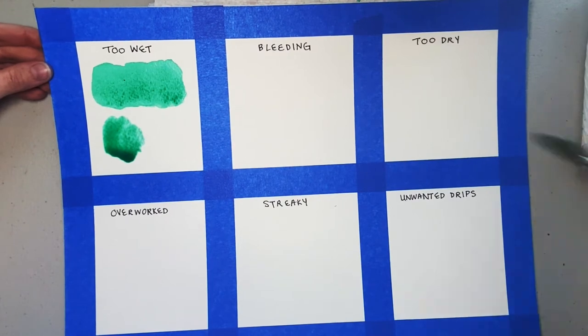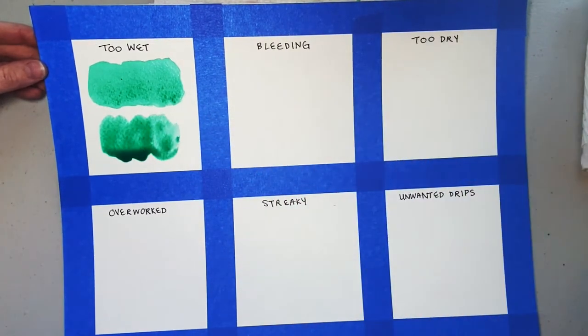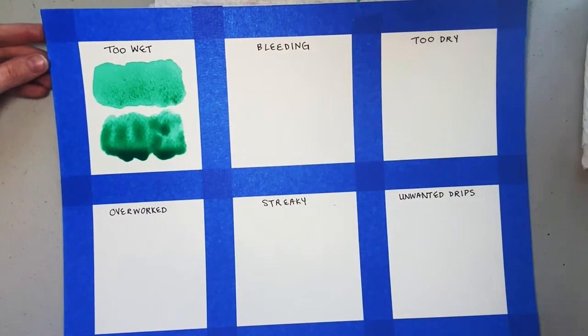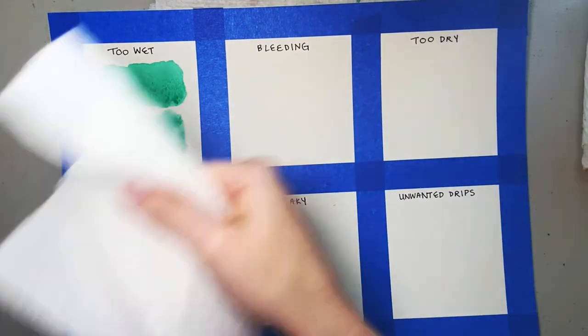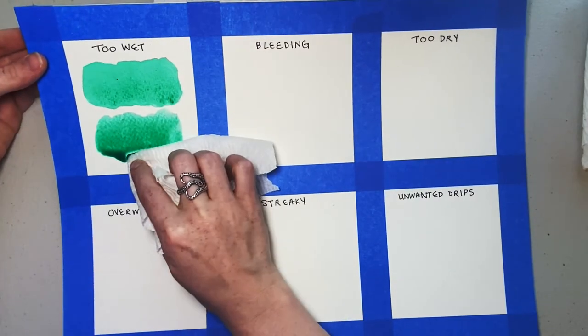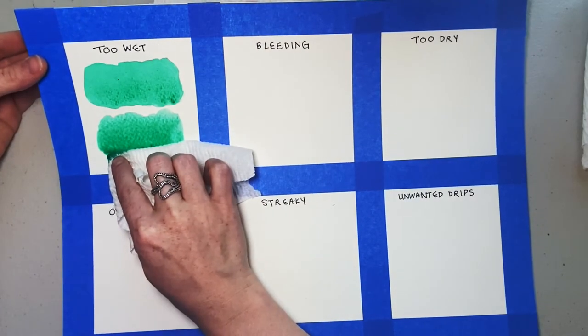I'm doing this again to show you that you can also use a paper towel to soak up the pooled water if you want. I prefer the brush because I feel like I have more control, but it can take a little bit longer. If you have a large area and you need to soak it up fast, a paper towel might be better.